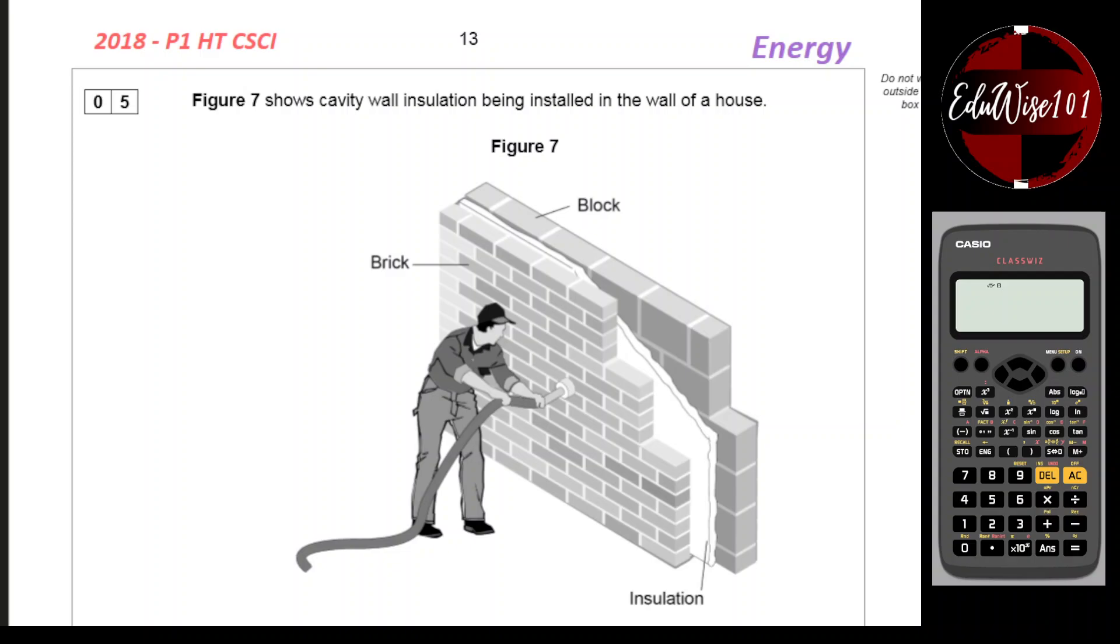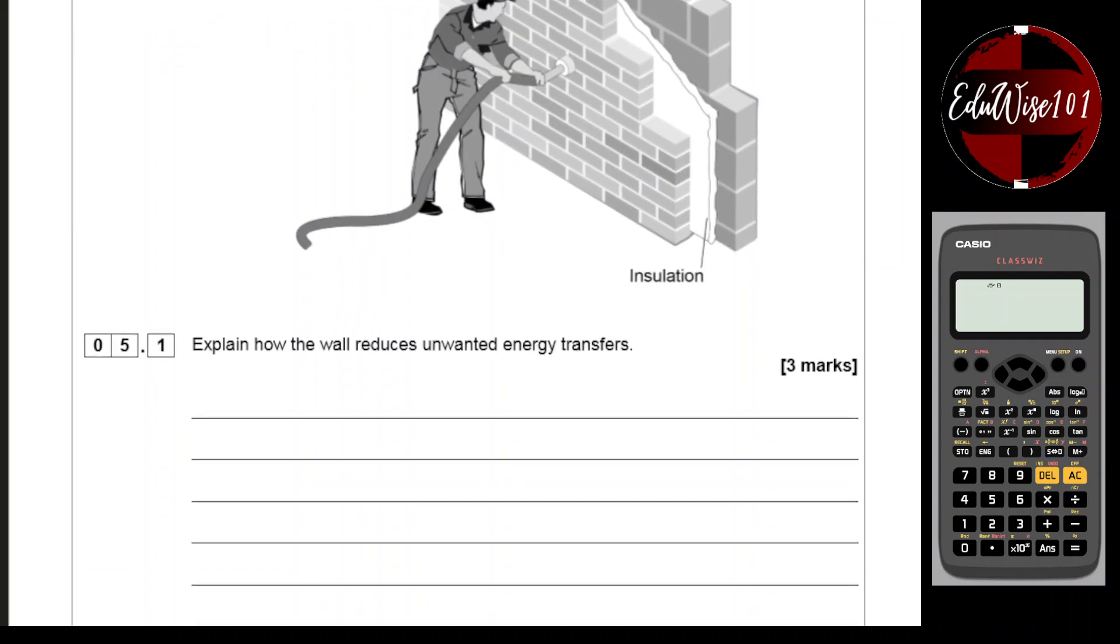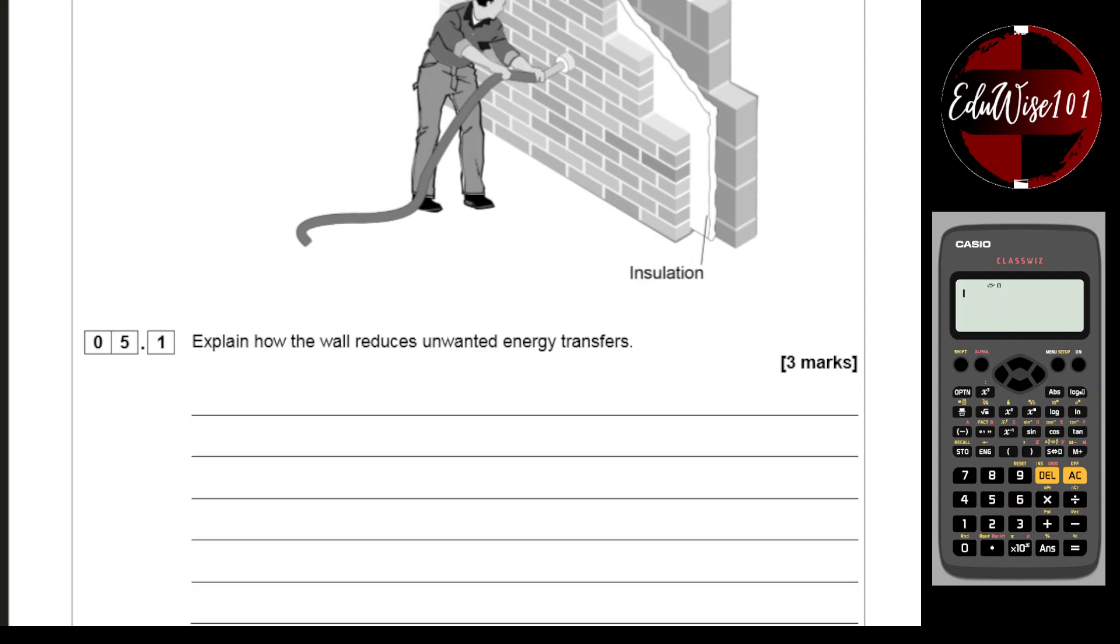Figure 7 shows cavity wall insulation being installed in the wall of a house. Question 5.1: explain how the wall reduces unwanted energy transfers. Now you should remember there are three different ways in which energy transfer happens: conduction, convection and radiation.